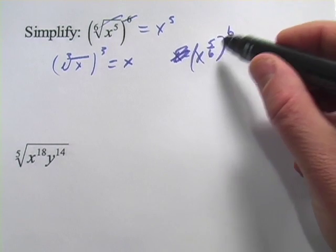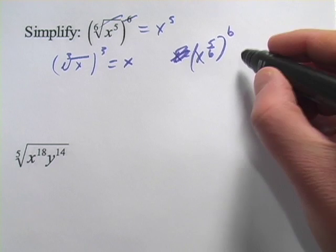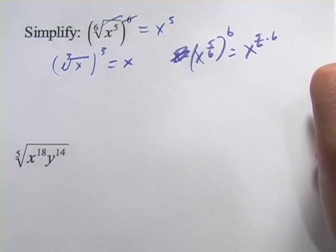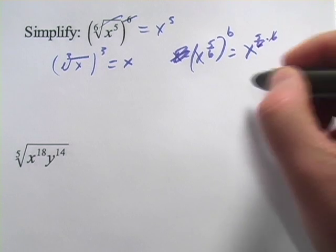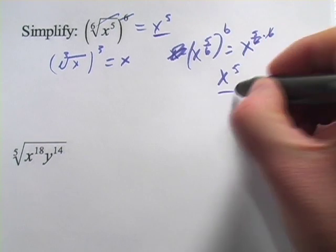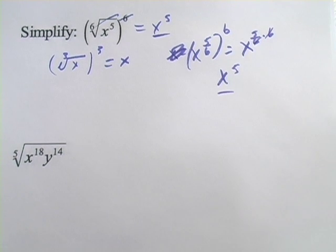And then when you raise an exponent to an exponent, you multiply the exponents. So this would equal x to the five-sixths times sixth power. And in that case, the sixes would just cancel. You'd come out with x to the fifth, which is the same thing we got the first time. Just two different ways to think about it.